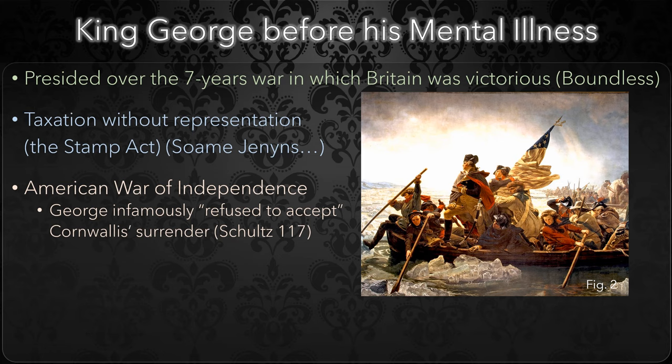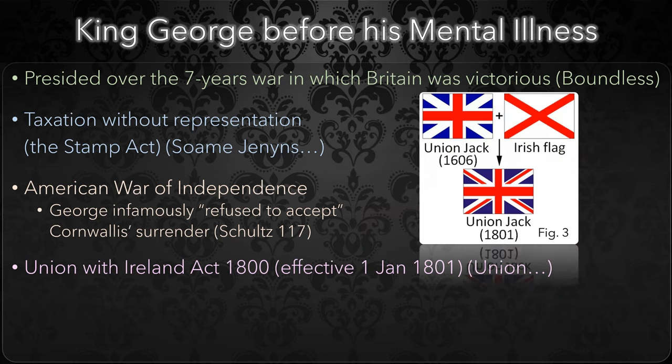Pitt supported King George's political ambitions, and together they were able to, among other achievements, unify Ireland with Britain, creating the United Kingdom of Great Britain and Ireland, which remained the title for the UK until Southern Ireland seceded from the Union in 1927. Today, the UK is known formally as the United Kingdom of Great Britain and Northern Ireland.